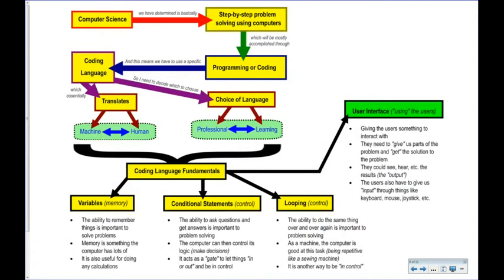We went a step further. We said, if that's true, the fundamentals of coding would involve — and we did this through our first unit examples — the idea of remembering things, or variables. That's going to be a whole unit we study: the ability for the computer to remember things and solve problems, something the computer has a lot of and is useful for doing basic calculations.